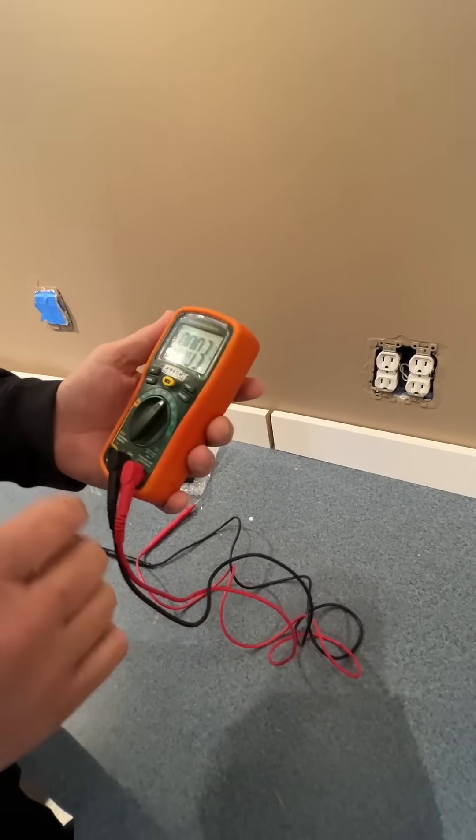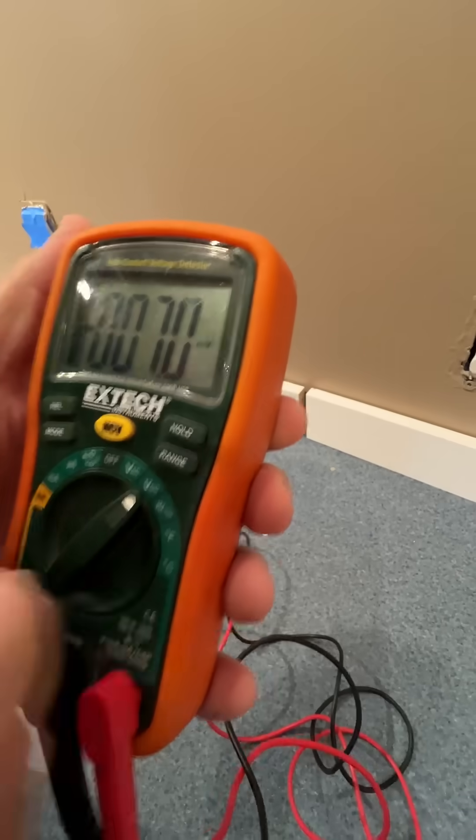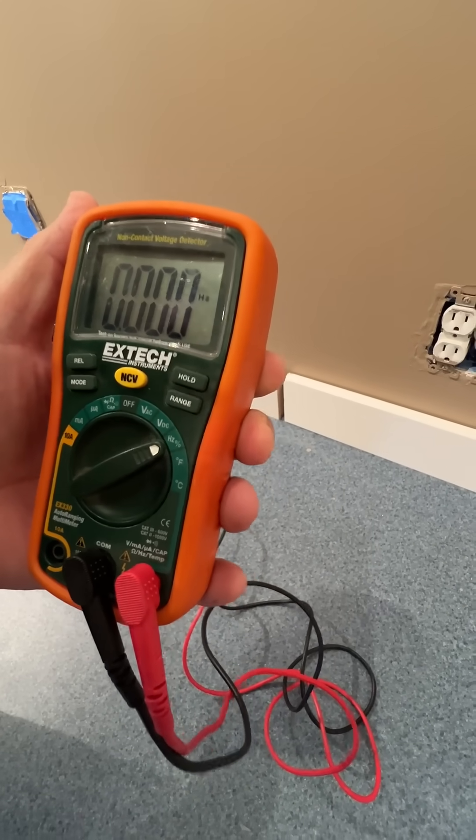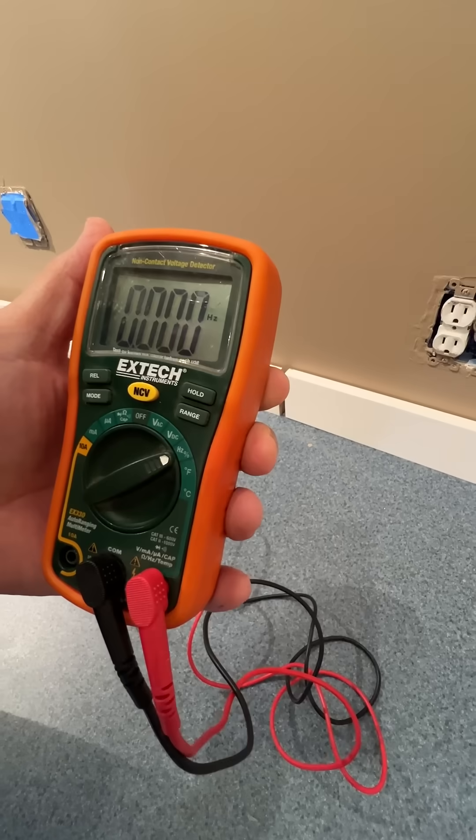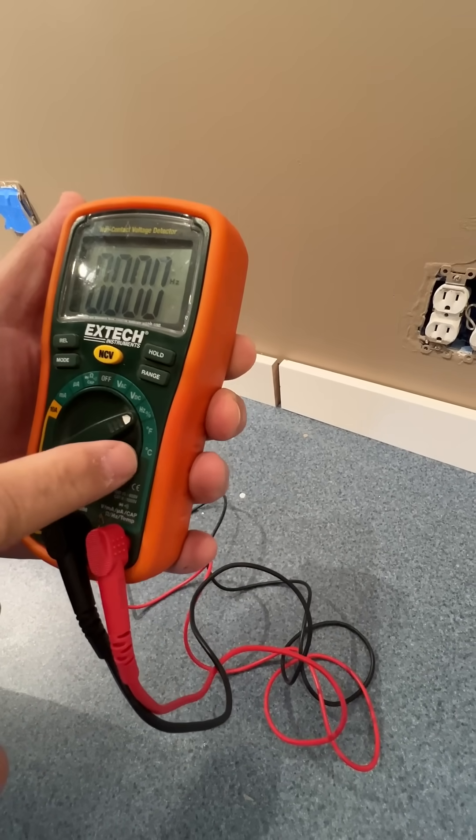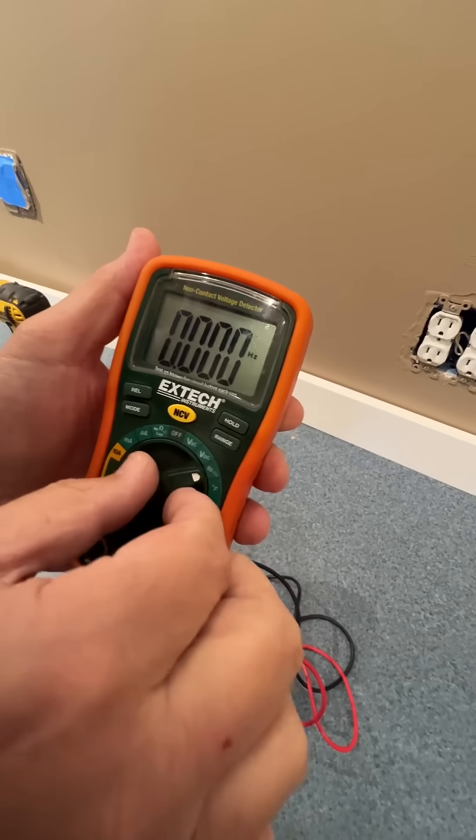In addition to that, you've obviously got DC voltage. You can measure hertz. So in this case, I should be expecting to see 60 hertz. You can put in a temperature probe and read in Fahrenheit and Celsius.